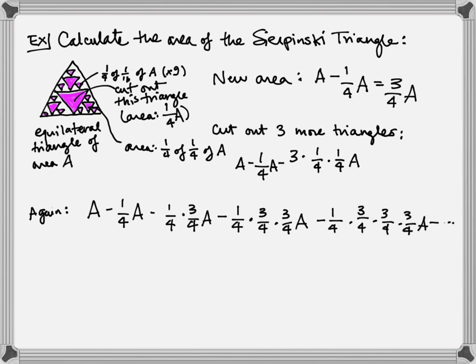And I start to see that this looks kind of geometric. Not right away, we have to do a little bit of stuff first, but let's factor out the A. And when I pull out the A, I have A times one minus the quantity one-fourth times three-fourths to the zero, plus one-fourth times three-fourths to the first, plus one-fourth times three-fourths squared, and so on.